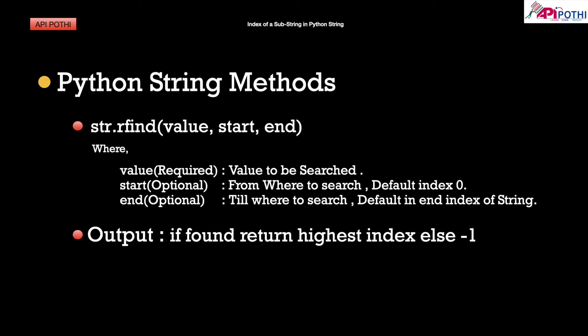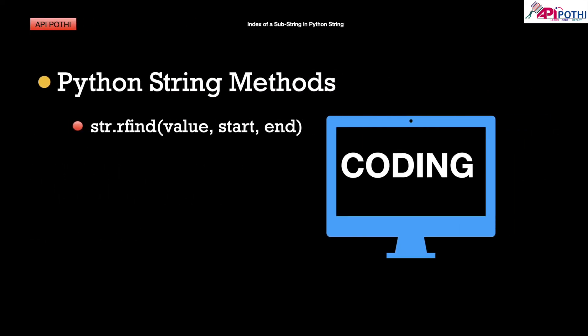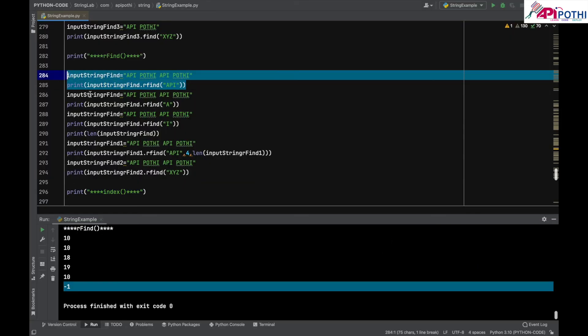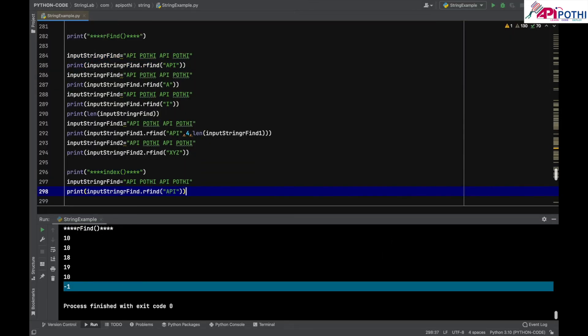Now coming to another method called index. The index method is the same as find with only one difference: if the substring is not matched, find gives minus one as output, whereas index throws a ValueError saying 'substring not found'. Let me copy the code and test it.